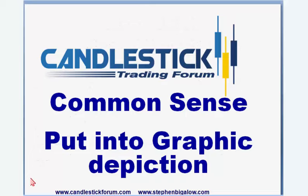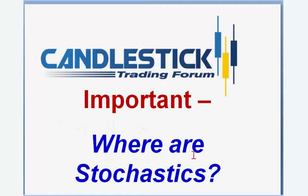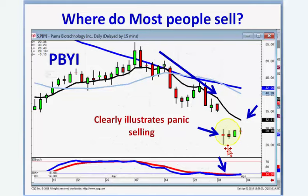Essentially what we're doing is looking at common sense put into a graphic depiction. When looking for buy signals, it's important we see where the stochastics are, because a lot of people will say that's a bullish engulfing signal, but if it's occurring in the overbought condition it doesn't mean very much. The Japanese rice traders illustrate where most people sell — they panic sell at the bottom — and on the other side, most people buy exuberantly at the top.